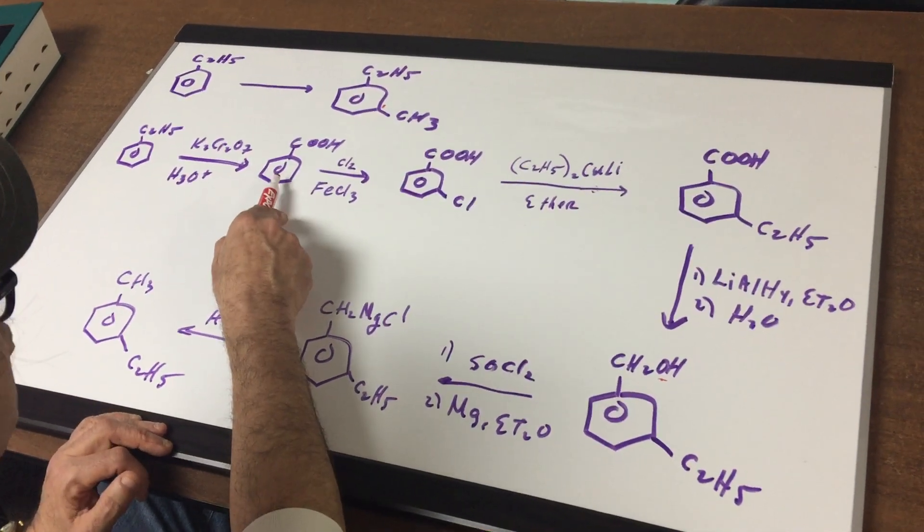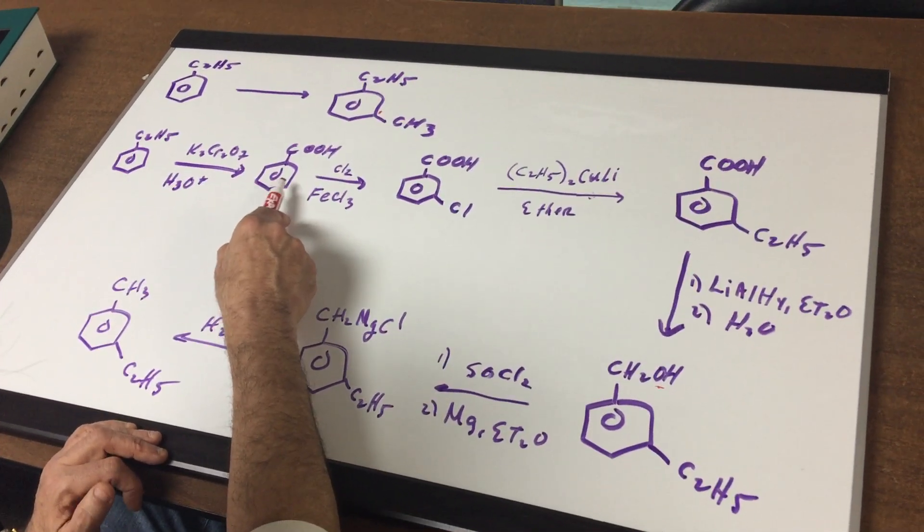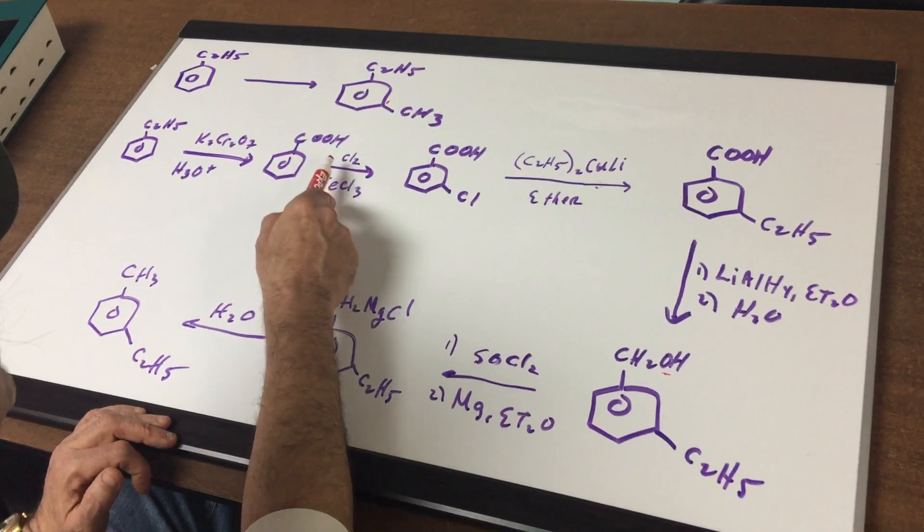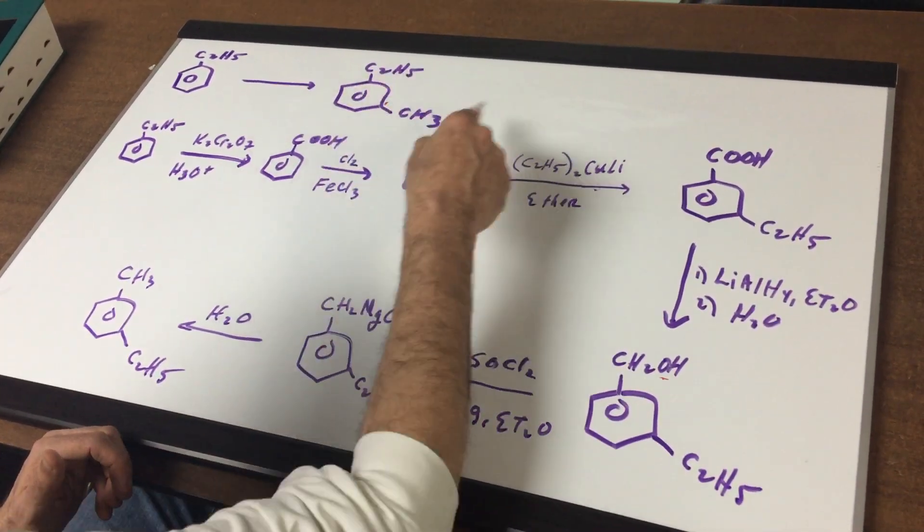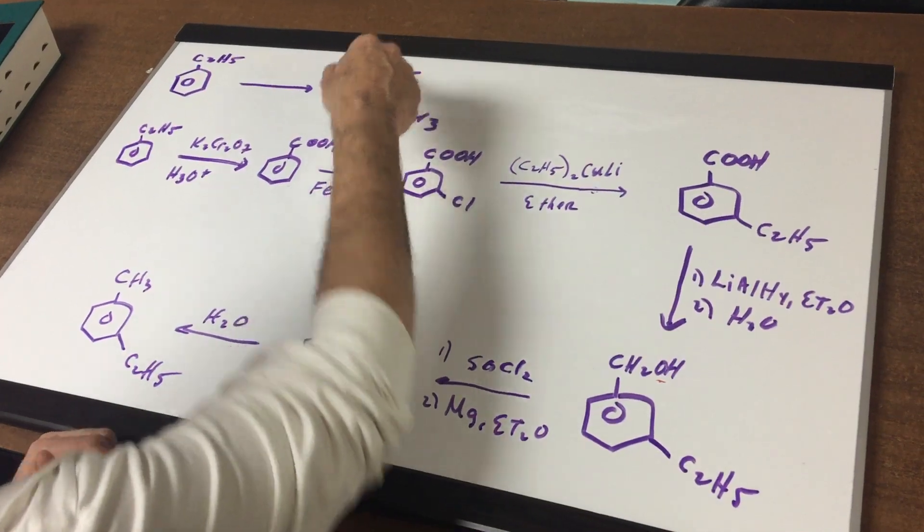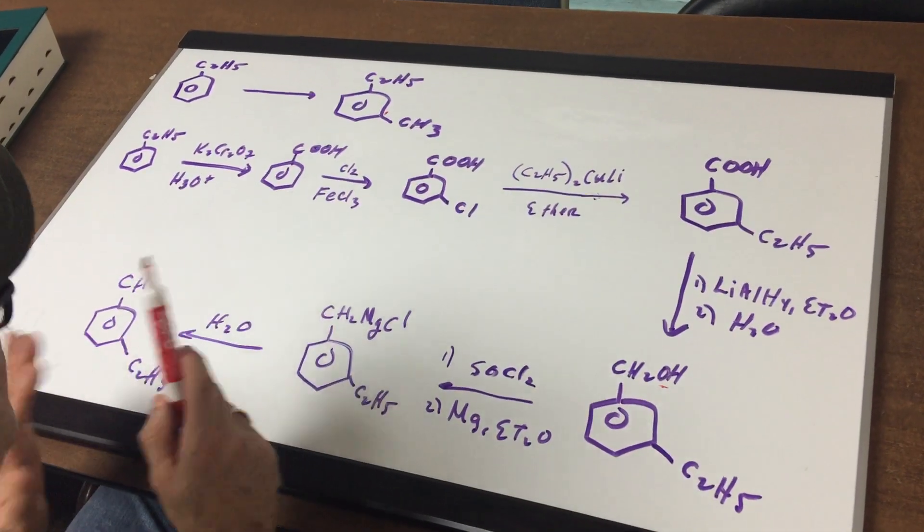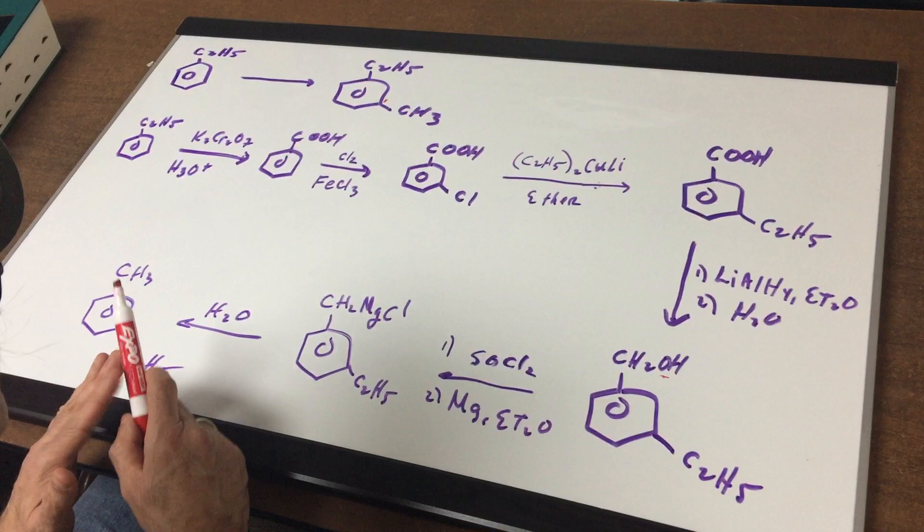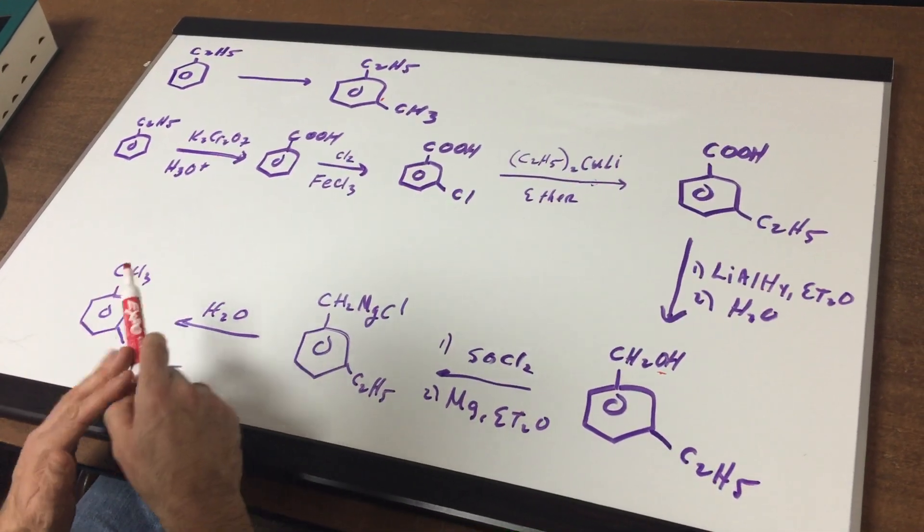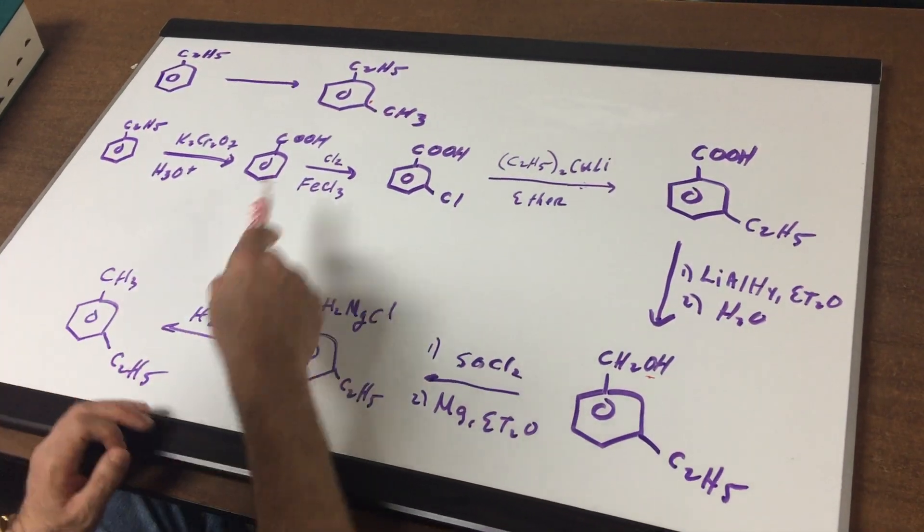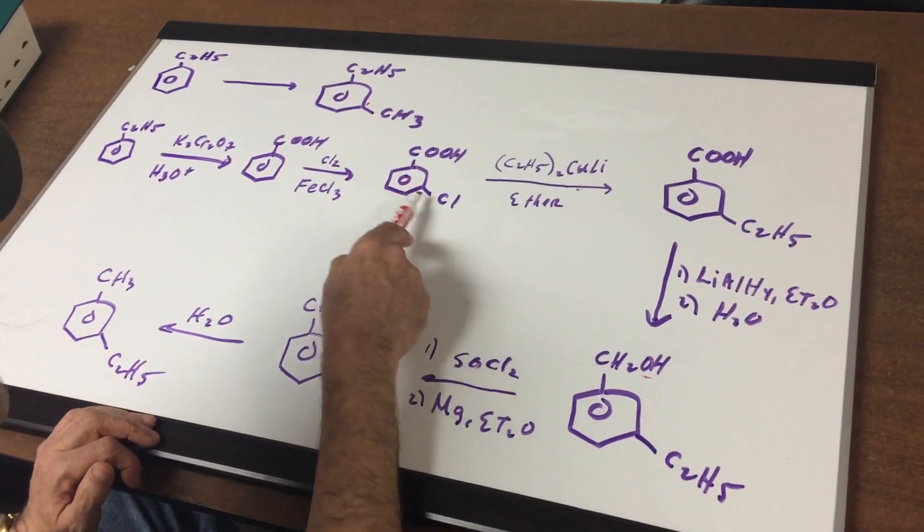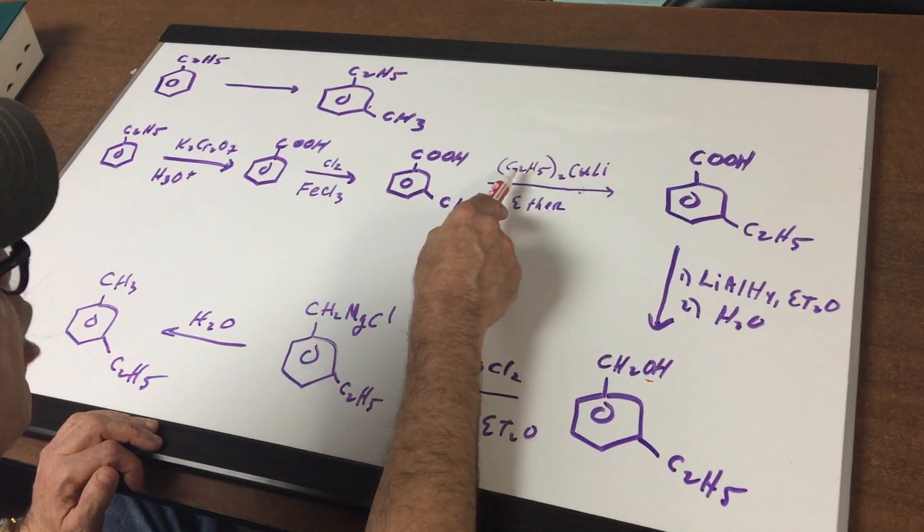Notice you cannot do a Friedel-Craft on this. You might say, why didn't I just add CH3Cl and aluminum chloride and put the methyl group here and then somehow put the ethyl group at the top. Never, never do a Friedel-Craft reaction if there's a meta director on the ring. It would fail. This is very deactivated. Meta directors don't work. So I'm going to use chlorine and then once I added the chlorine on...